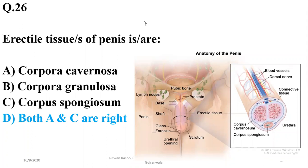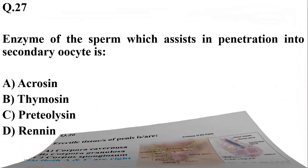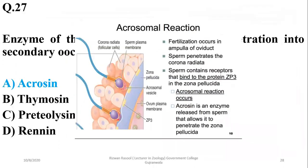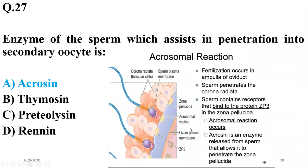Number twenty-seven: the enzyme of the sperms which assists in penetration into the secondary oocyte is acrosin, which is found in the acrosomal region of the head of the sperms. It helps in the penetration of the sperm via the zona pellucida and corona radiata. The acrosin enzyme is released from the sperm to allow it to pass through the zona pellucida, so the right option is alpha.